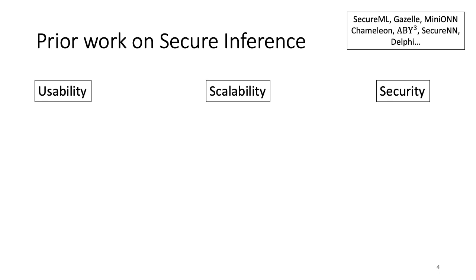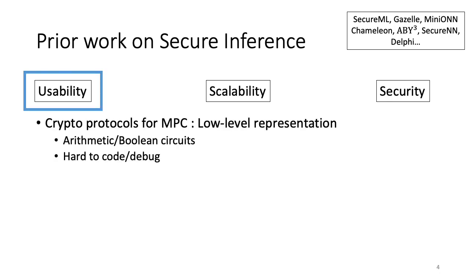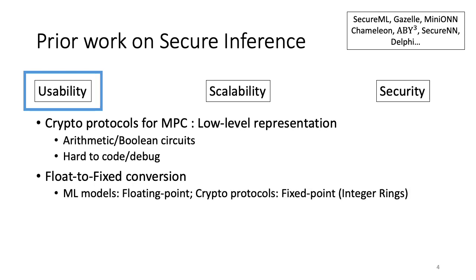First, there is usability. MPC protocols typically work over low-level circuit representation of the desired computation. This representation is in the form of arithmetic, Boolean or a combination of these circuits which makes it very hard to code the required functionality and debug them. Another issue is that of float-to-fixed conversion. ML models work over floating-point numbers while MPC protocols perform better over integer rings. This is why we need to encode floating-point numbers into elements of an integer ring using finite bits of precision. This process is known as float-to-fixed conversion and such encoded numbers are called fixed-point numbers. A major shortcoming of prior works was their manual float-to-fixed conversion for their ML benchmarks, which becomes very difficult for large benchmarks.